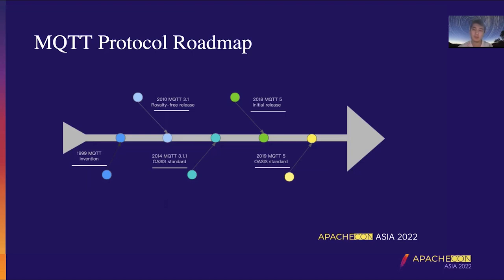MQTT was initially used for data transmission between sensors in oil pipelines and satellites. MQTT version 3.1.1 was officially released in October 2014, and at the same time, version 3.1.1 became the OASIS protocol standard, meaning it became the international IoT standard. Just as HTTP paved the way for people to share information over the web, MQTT standardization could connect billions of low-cost IoT devices to the web. MQTT 5.0 was officially released in May 2018, and in March 2019, version 5 became the new OASIS standard.